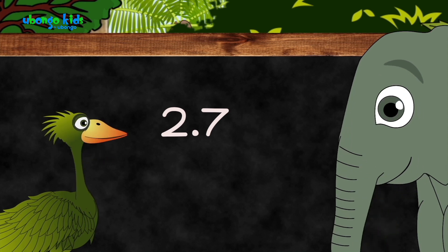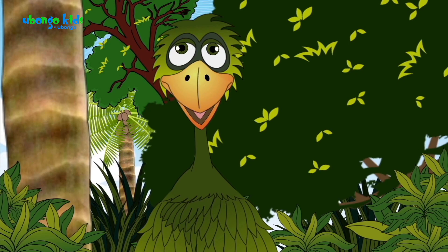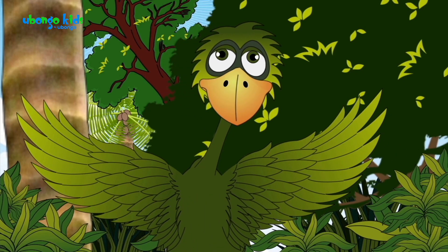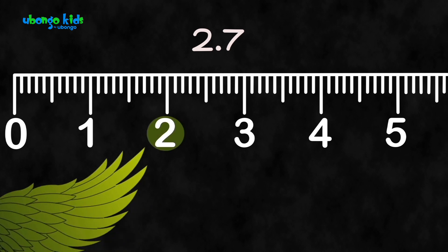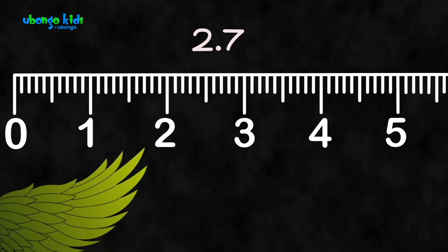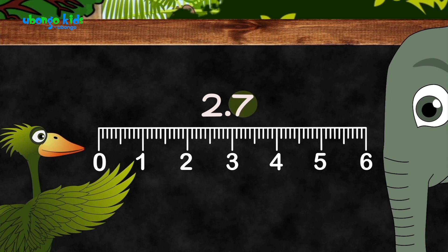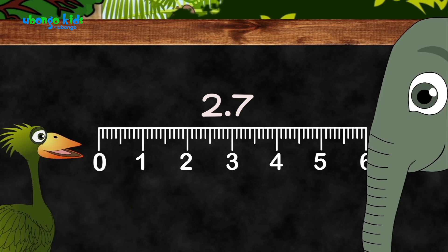Let's read this number now: 2.7. So this is how we show 2.7 on the number line. The seven is to the right of the decimal point, so if we divide this space up into ten parts, we can see the tenths.